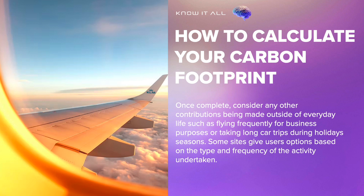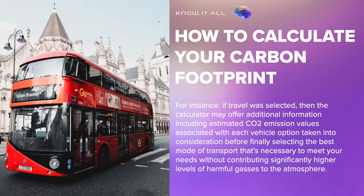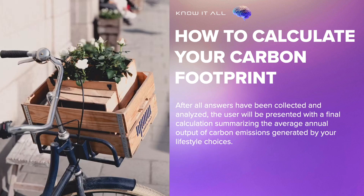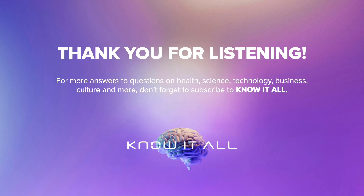Some sites give users options based on the type and frequency of the activity undertaken. For instance, if travel was selected, the calculator may offer additional information including estimated CO2 emission values associated with each vehicle option, before finally selecting the best mode of transport necessary to meet your needs without contributing significantly higher levels of harmful gases to the atmosphere. After all answers have been collected and analyzed, the user will be presented with a final calculation summarizing the average annual output of carbon emissions generated by your lifestyle choices. Thank you for listening.